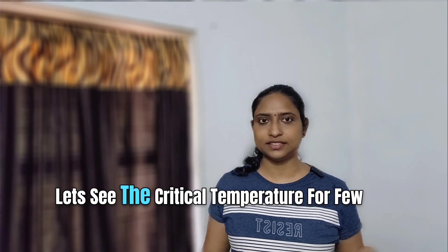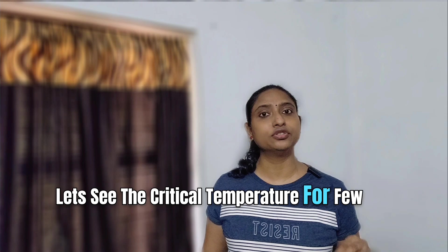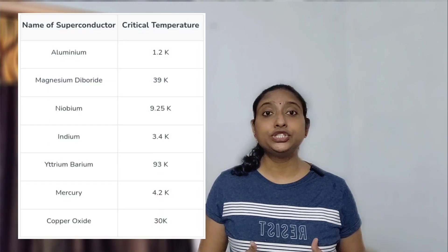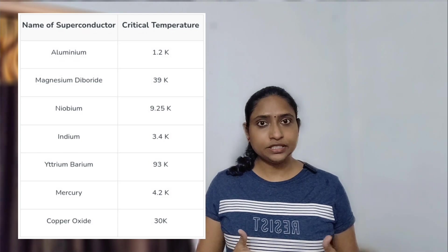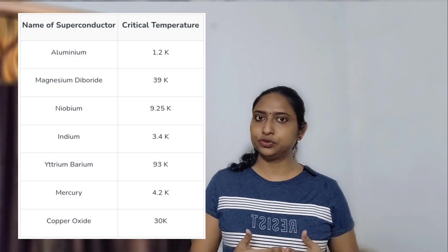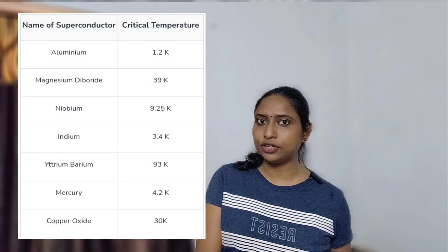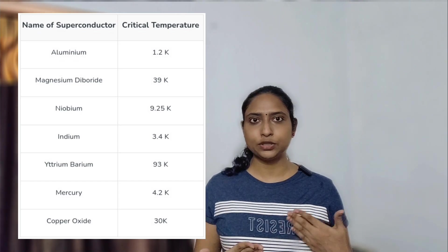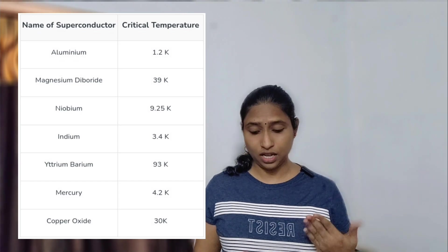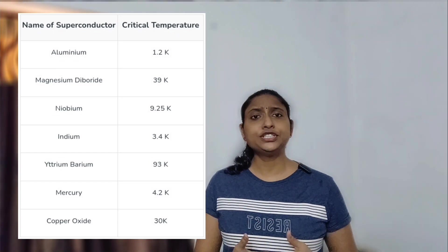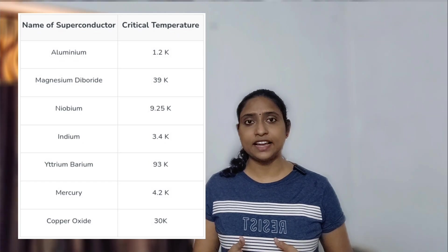Let's see the critical temperature for a few materials. For aluminium, it is 1.2 Kelvin. Magnesium diboride, 39 Kelvin. Niobium, 9.25 Kelvin. Indium, 3.4 Kelvin. Yttrium barium, 94 Kelvin. Mercury's critical temperature is 4.2 Kelvin. In case of copper oxide, it is 30 Kelvin.